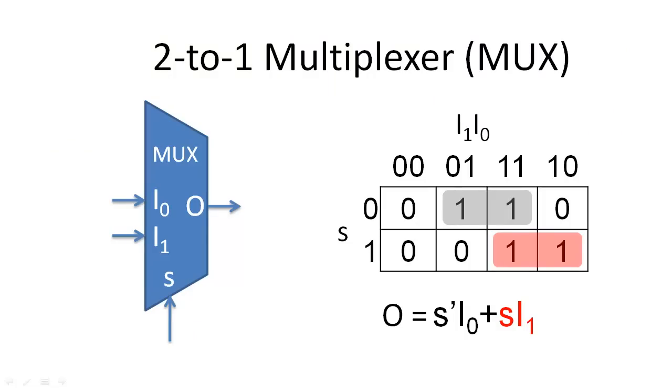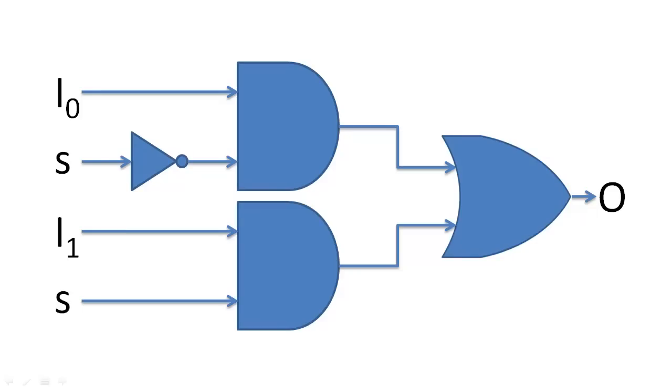As we have previously shown, a two-to-one multiplexer can be specified with this K-map and minimal Boolean expression. When we implement this Boolean expression, the circuit would look like this.